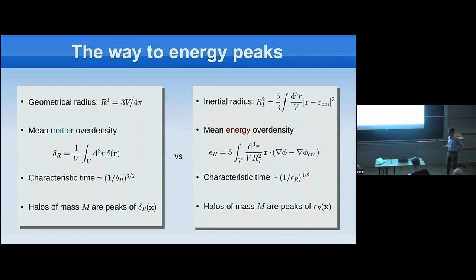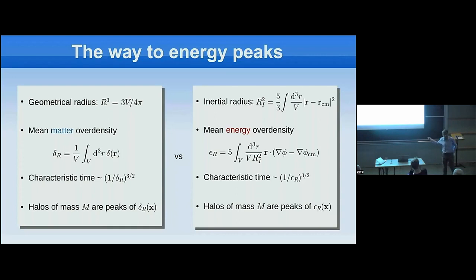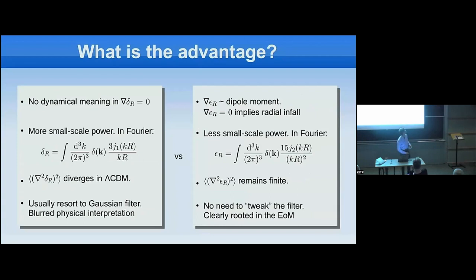As a dynamical quantity, the energy over-density sets the characteristic collapse time for r_i — you simply replace δ with ε. So looking for halos by finding regions whose inertial radius collapses soonest leads you to look for peaks of the energy over-density field rather than the matter over-density field.